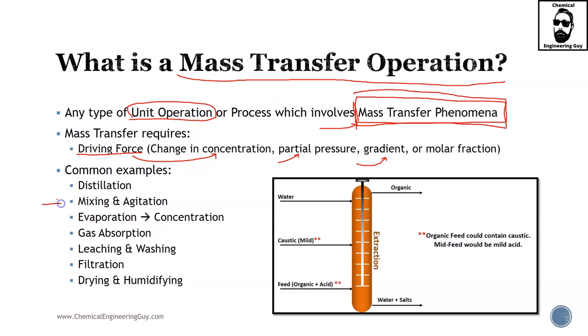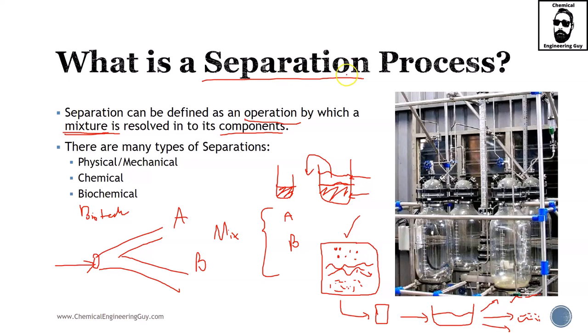Common examples of a mass transfer operation include distillation. Mixing and agitation are great examples of what is a mass transfer operation but not a separation process. Mixing involves mass transfer because you have component A and component B separated — they will eventually mix as time passes if they are miscible. Or with agitation, if you are willingly agitating your vessel, there is mass transfer, of course. But the problem is that we are doing literally the reverse of separation.